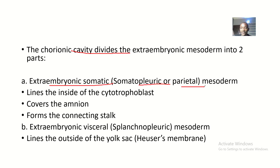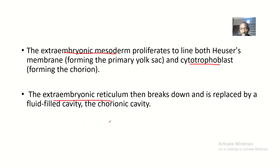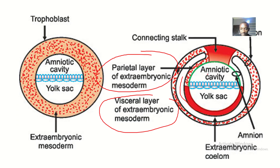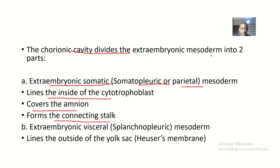We have the extra embryonic somatic, or the somatopleuric, or the parietal mesoderm. This lines the inside of the cytotrophoblast, and it covers the amnion and forms the connecting stalk. So it is the innermost layer of the extra embryonic mesoderm, ultimately coming here to form the connecting stalk.